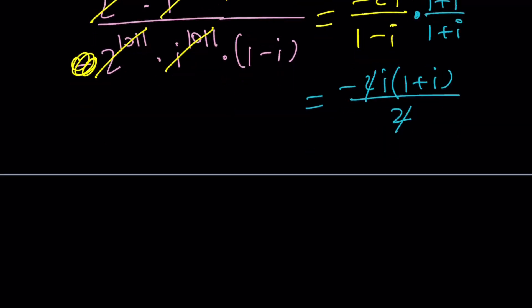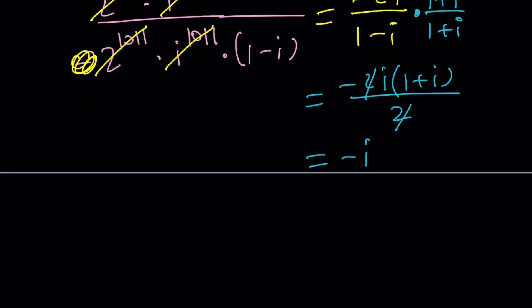You end up with negative i times that. If you distribute it, you're going to get negative i minus i squared. But remember what we said, i squared is negative 1. So, negative i squared is going to be positive 1. So, the answer would be 1 minus i. Awesome.